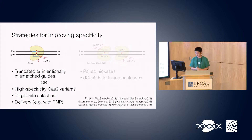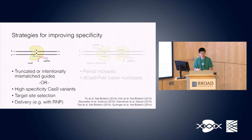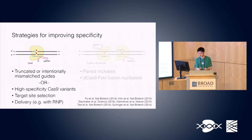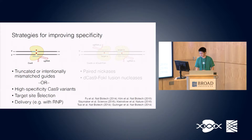Two other general things that have a big influence are target site selection — picking guides that are really specific and have very few off-targets with few mismatches — and trying to reduce the exposure of the genome to Cas9, for example by transient delivery of ribonucleoprotein complex instead of sustained expression. I should point out that truncated or intentionally mismatched guides and high-specificity Cas9 variants are generally mutually exclusive — you use either the Cas9 variants or truncated/mismatched guides, but not both.